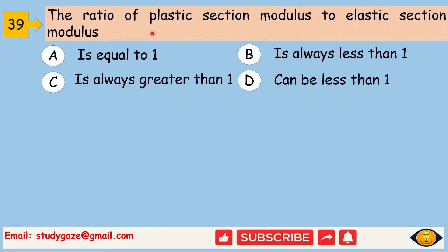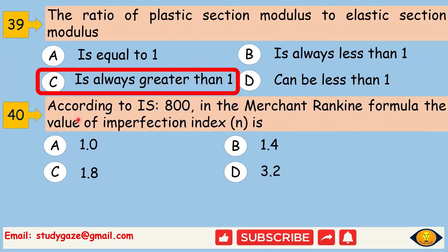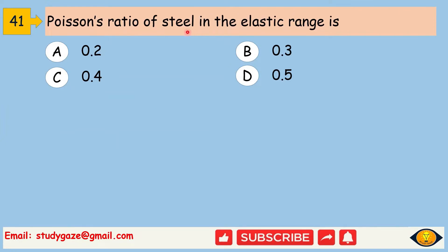The ratio of plastic section modulus to elastic section modulus is always greater than 1. Next, according to IS 800, in the Merchant-Rankine formula, the value of imperfection index n is 1.4. Next, Poisson's ratio of steel in the elastic range is 0.3.